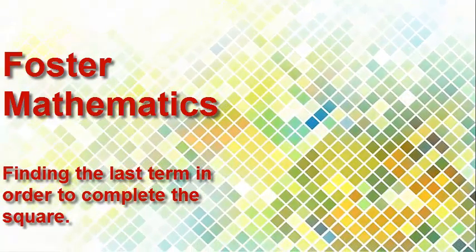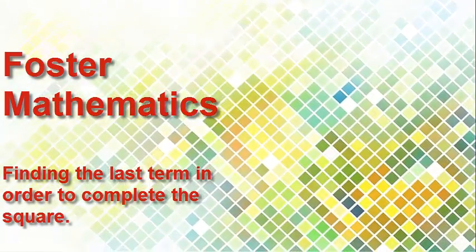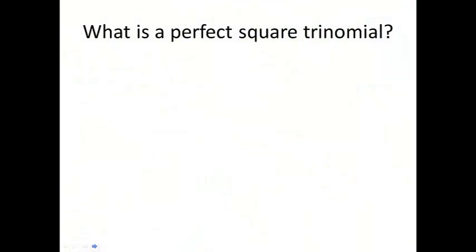We're trying to find the last term of a perfect square trinomial. If we take a look at what the definition is of a perfect square trinomial, we know that to be x squared plus 2 times b times x, and then plus b squared. In this format, the factors of this trinomial will always be x plus b squared, or x plus b times x plus b.